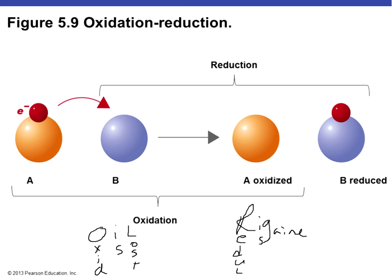Looking at this picture: molecule A has an electron and is going to lose it to molecule B. As a result A has been oxidized, and because B picked up this negatively charged entity B is said to have been reduced. At first blush it seems odd, but look at the charge: the electron carries a negative charge, so adding something negative reduces the charge of molecule B. Remember: oxidation is loss of electrons and hydrogens, reduction is gain.